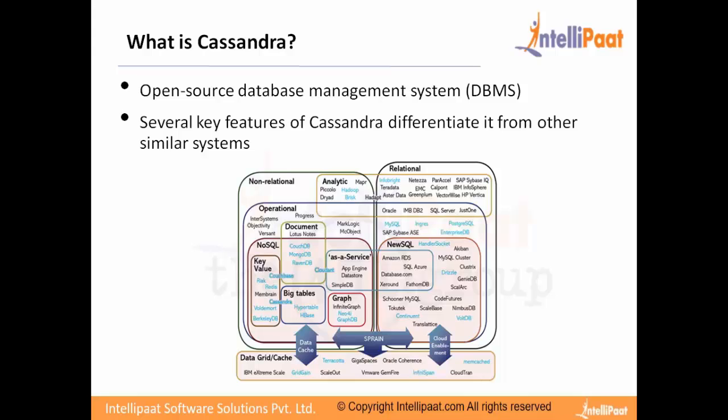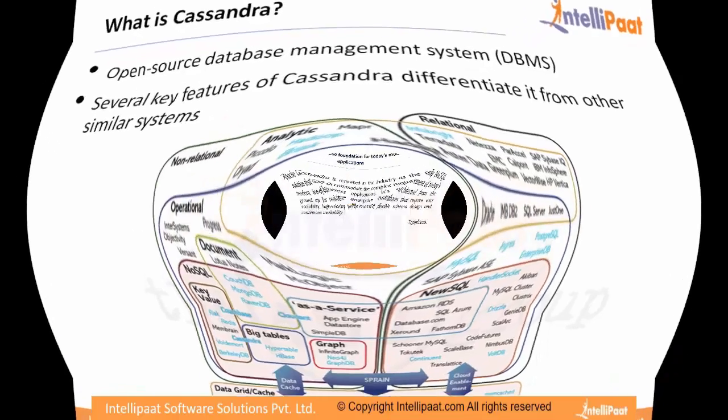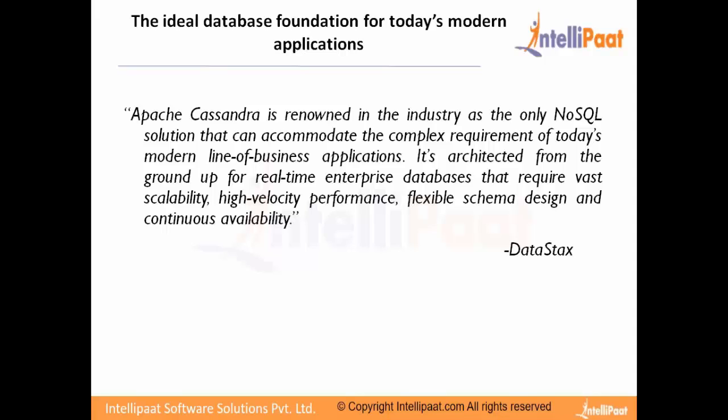There are different types of NoSQL databases: graph databases, document stores like MongoDB, column-family or column-major databases, and key-value stores. Cassandra falls into the key-value store category.